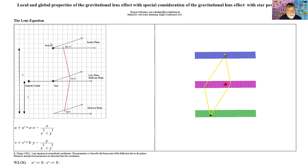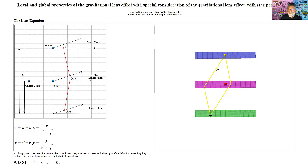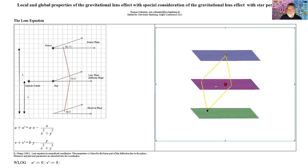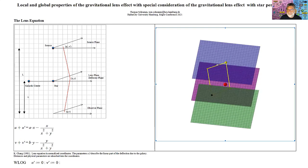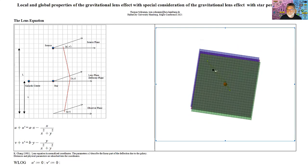The right-hand image shows the Einstein Cross: four images of a quasar seen through a galaxy. The last image shows that whole galaxies could be lensed to arcs by a foreground mass that could hardly be seen without this effect. We model this effect by a mapping from a lens or deflector plane to an observer or source plane, studying the lens action of a star in a galaxy.